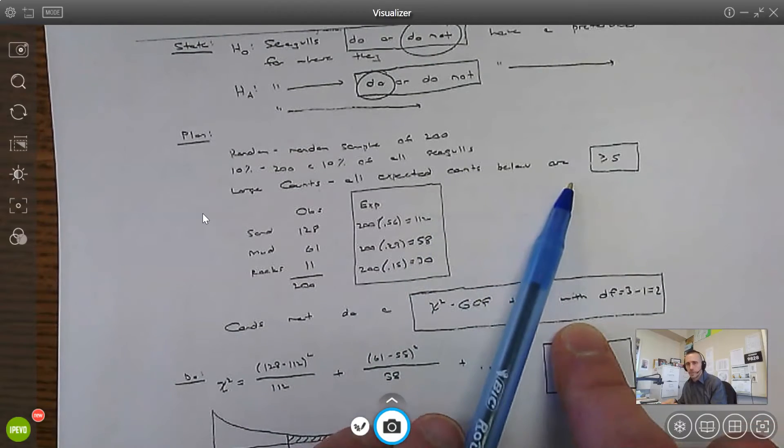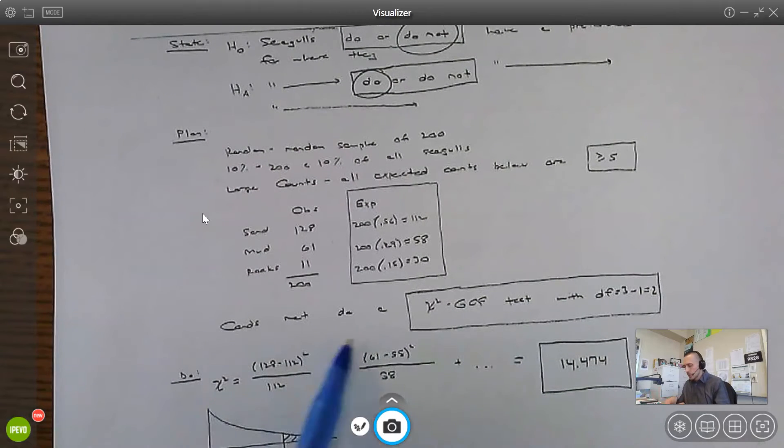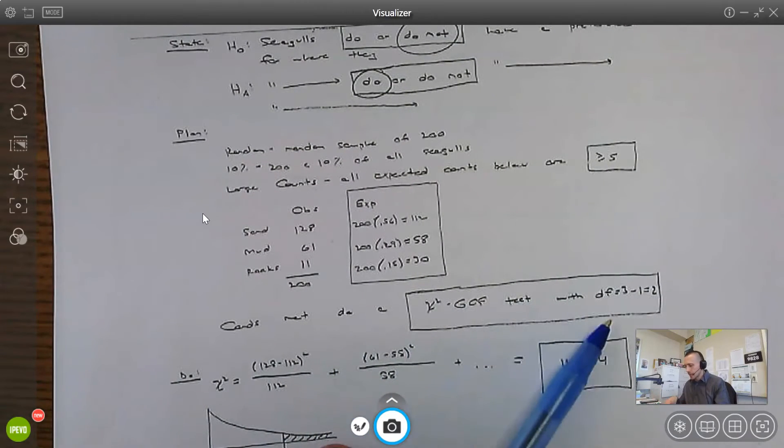So the expected values are all at least five. Again, I can list them 112, 58, 30, greater than or equal to five. I can do that. Conditions are met. We're going to do a chi-squared goodness of fit test with two degrees of freedom, three minus one, two.